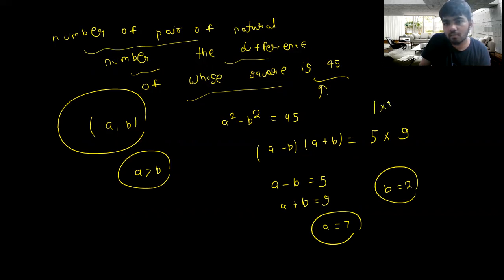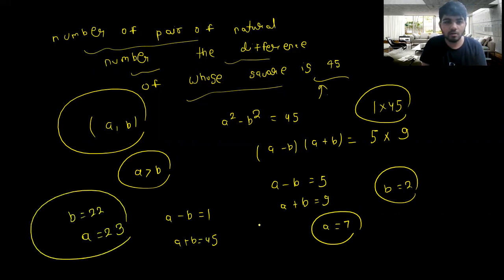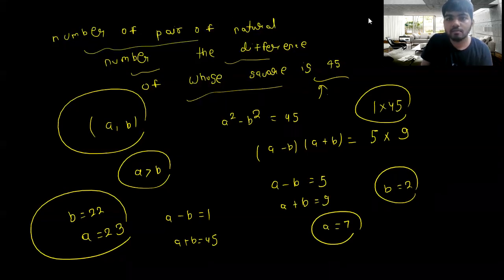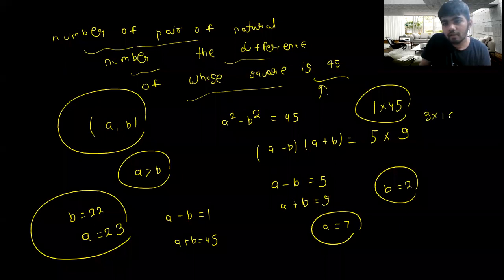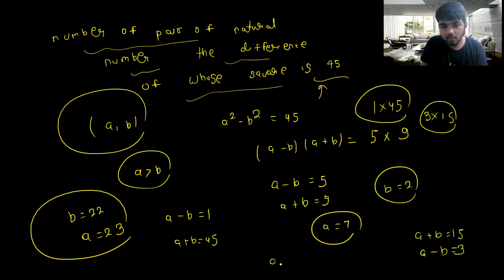If I try to factor this, I can write it as (a+b)(a-b) = 45. If a+b = 45 and a-b = 1, then a = 23 and b = 22. If a+b = 15 and a-b = 3, then a = 9 and b = 6.